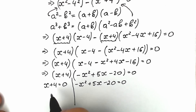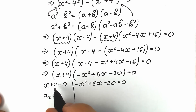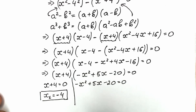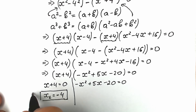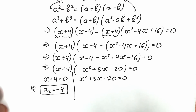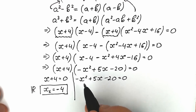From x plus 4 equals zero, we easily get our first root: x₁ equals minus 4. This is a real number root.